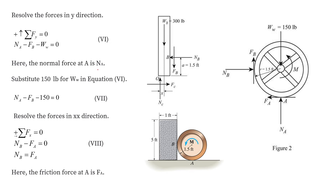Now let's move to the wheel. In the y direction on the wheel: Na − Fb − W = 0, considering upward as positive and downward as negative. Substituting the value of the wheel's weight, we obtain equation 7.